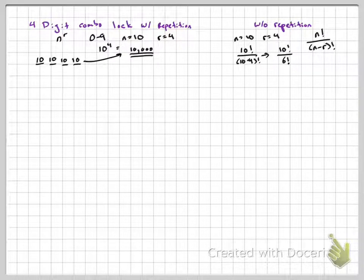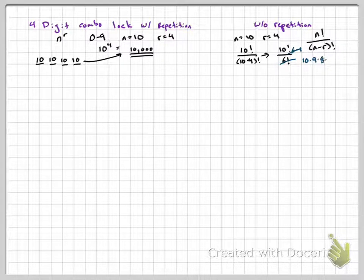6 to 1 goes away on the bottom. 6 to 1 goes away on the top. So that means I'm left with 10, 9, 8, 7.